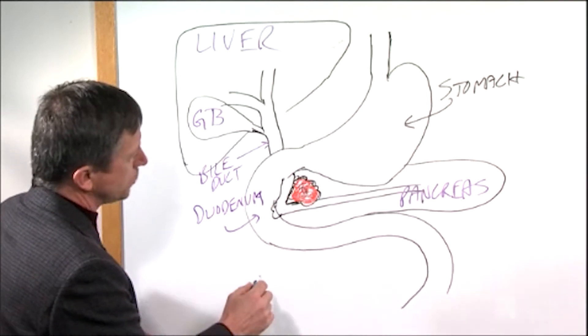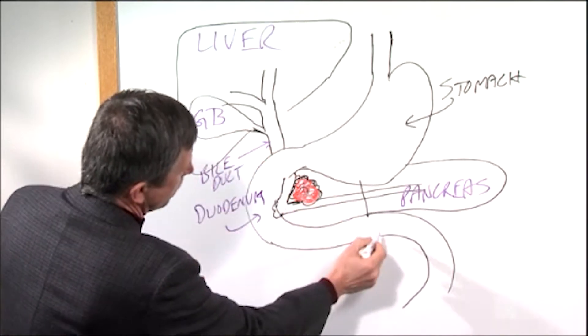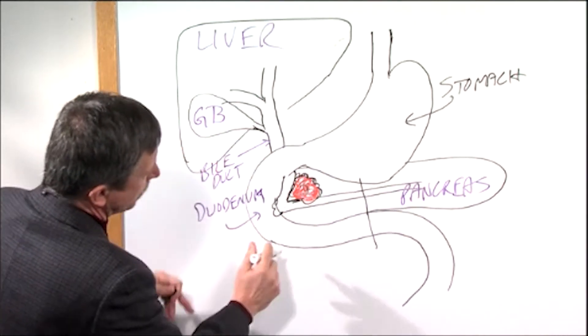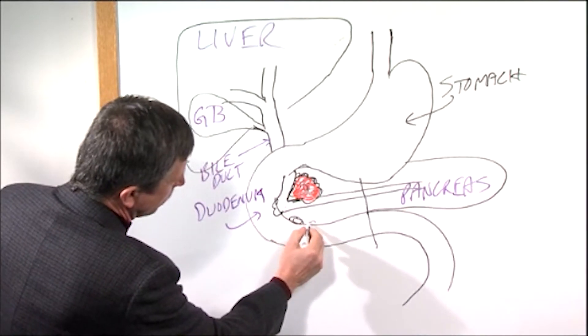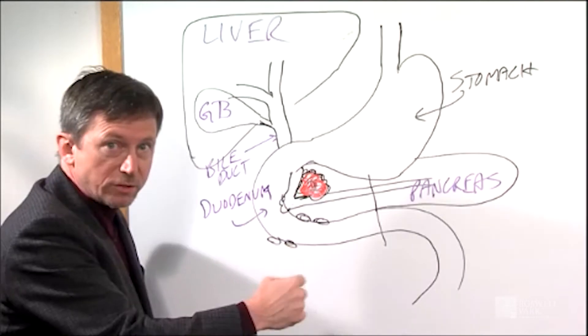So in a Whipple procedure, the head of the pancreas is removed, and this is the head here, as well as the first part of the small intestine called the duodenum. The reason we need to do that is because there are lymph glands in this area and those have to be removed as part of the surgery.